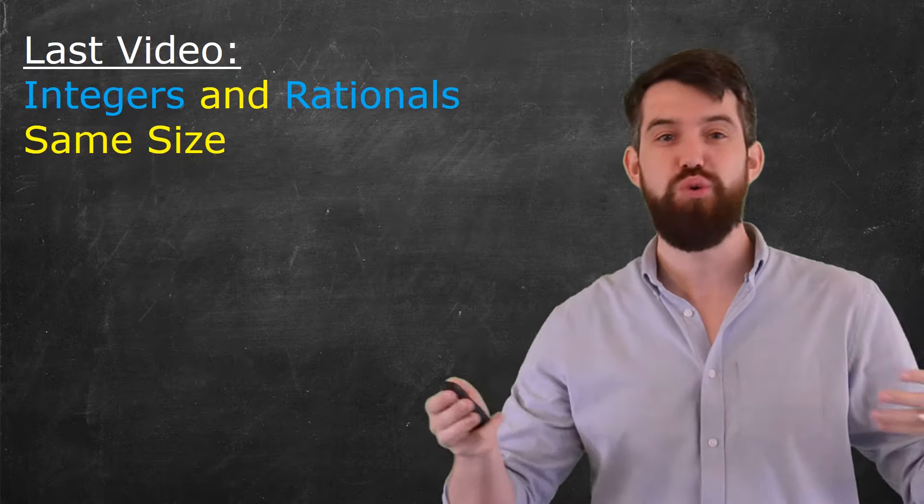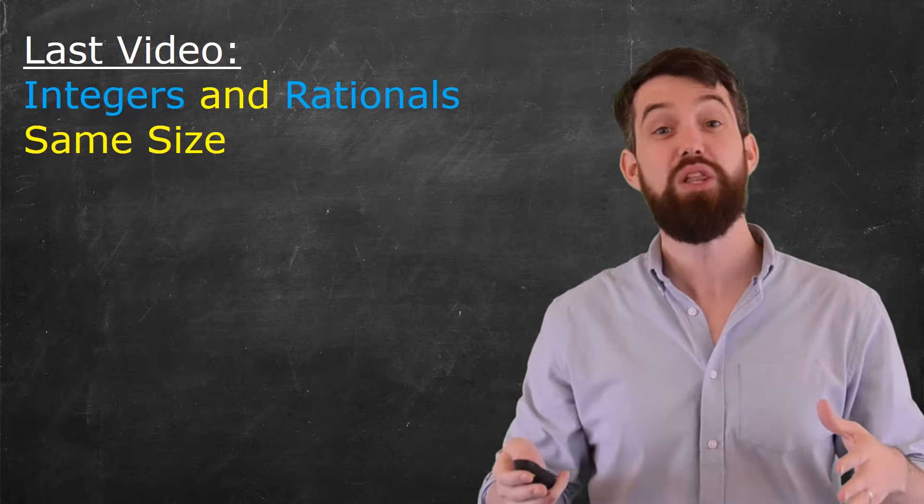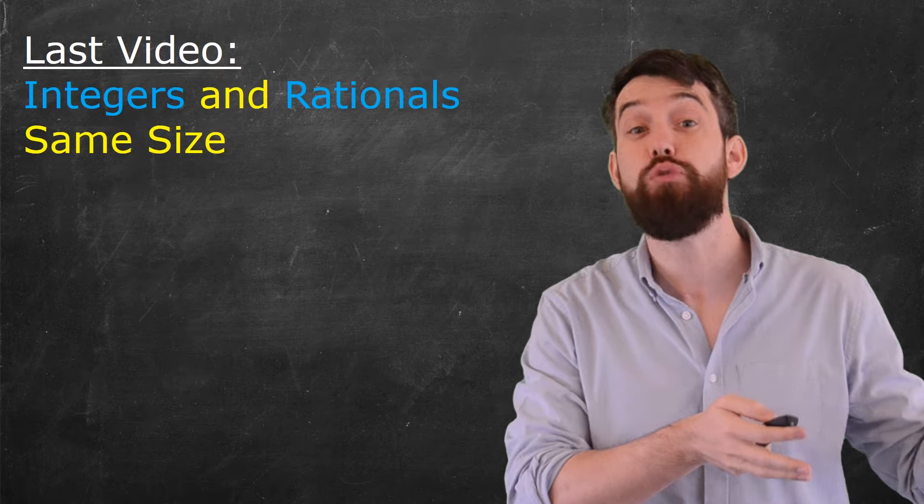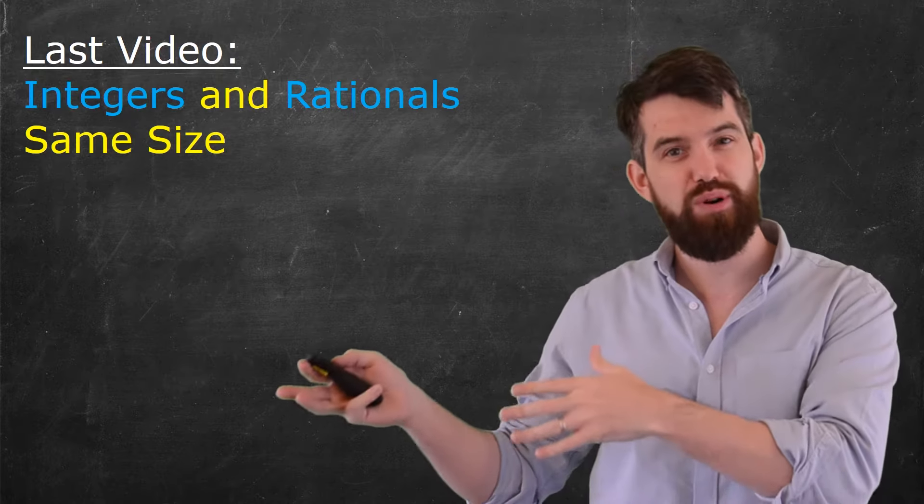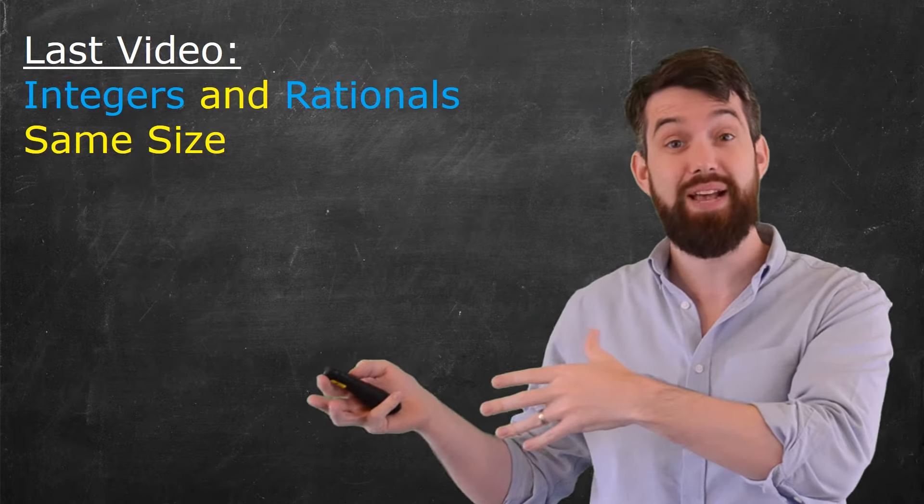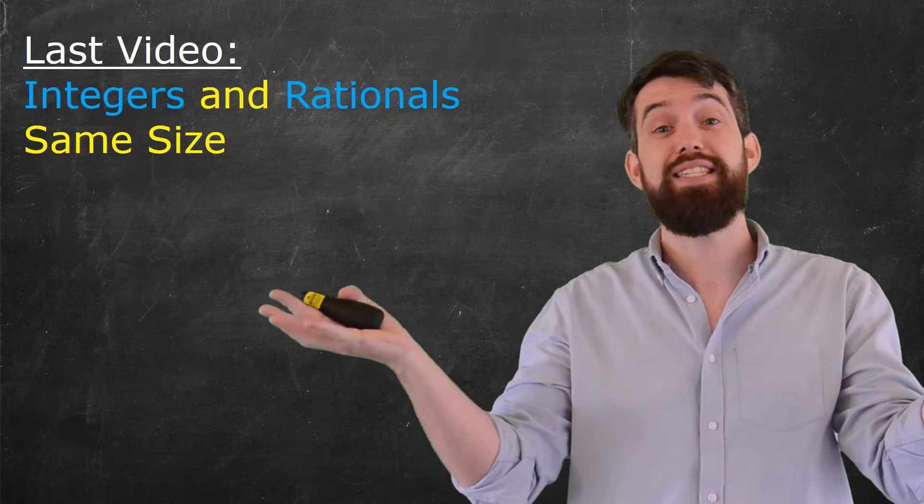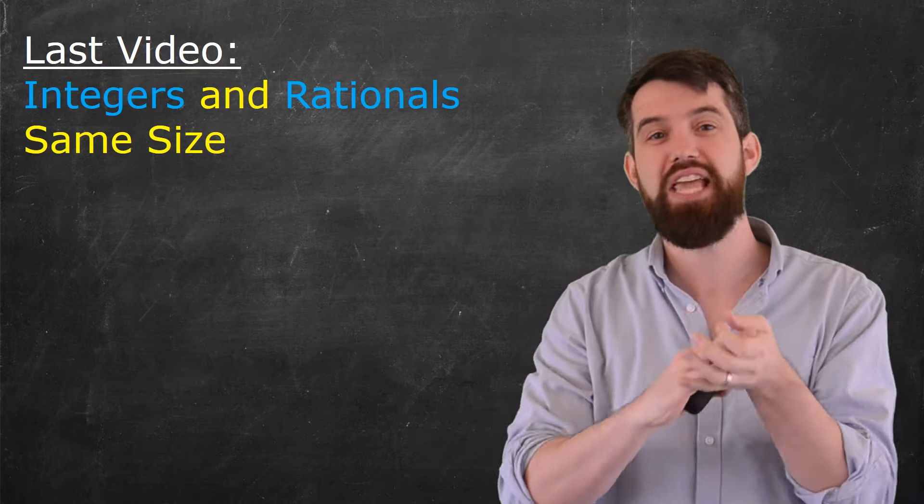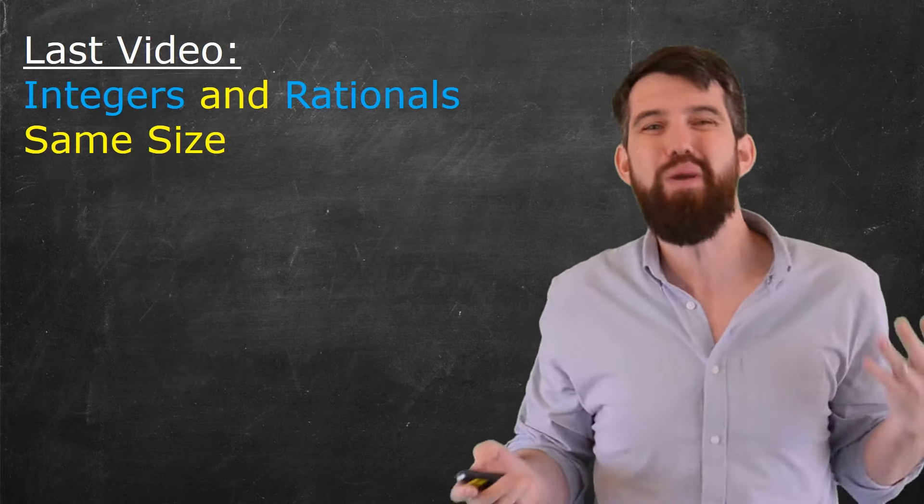In the first episode of my new cool math series, we looked at integers, numbers like 1, 2, 3, 4, and rational numbers, numbers like 3 fifths or 5 sevenths, and we said that these two infinite sets actually have the same size.